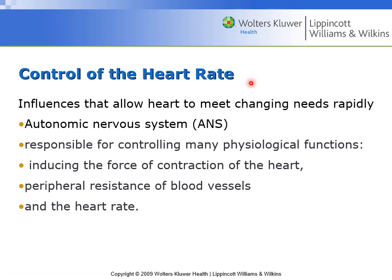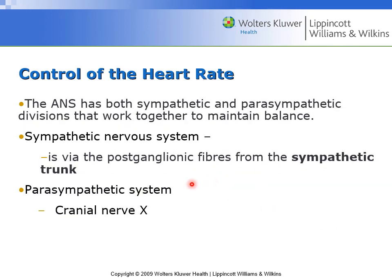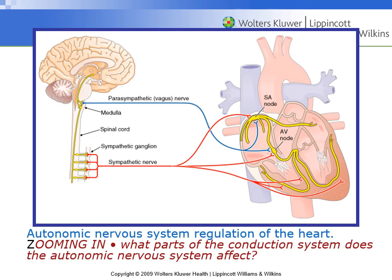The heart rate is controlled via the autonomic nervous system, which controls many physiological functions including the force of contraction of the heart. The autonomic nervous system has both sympathetic and parasympathetic components. The sympathetic nervous system, via postganglionic fibers from the sympathetic trunk, speeds up the heart rate. The parasympathetic system, via cranial nerve number 10 — the vagus nerve — slows down the heart rate.